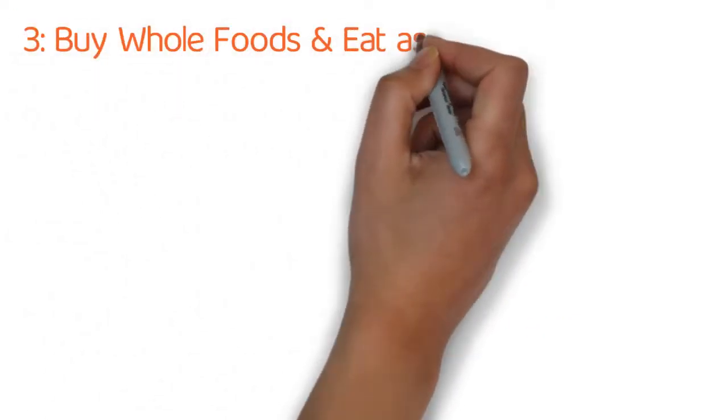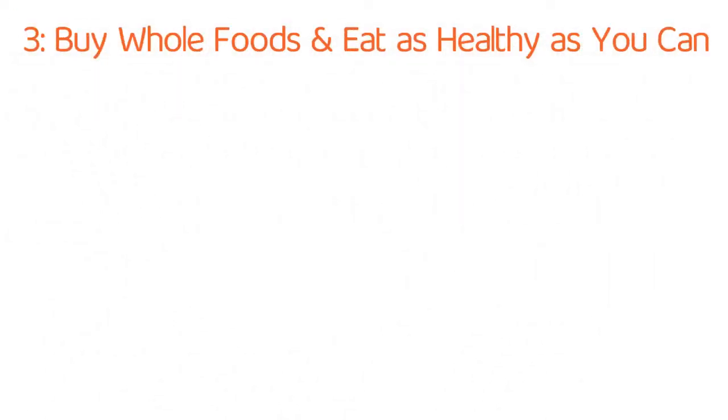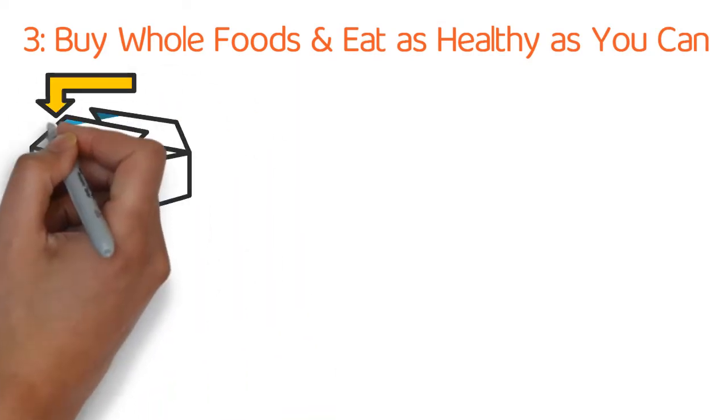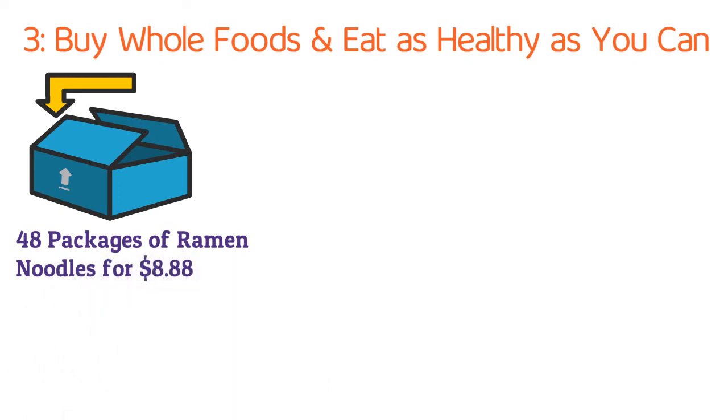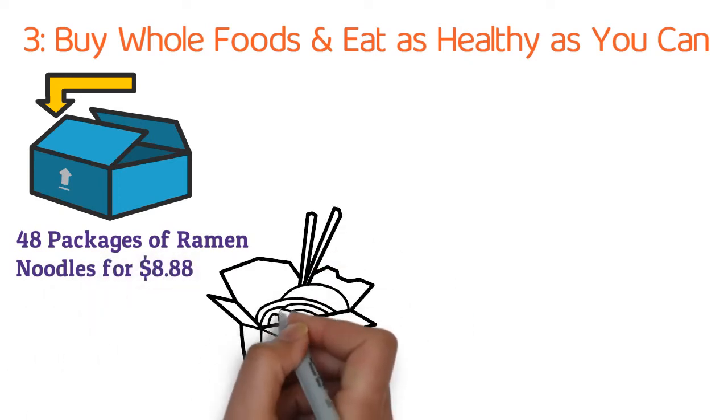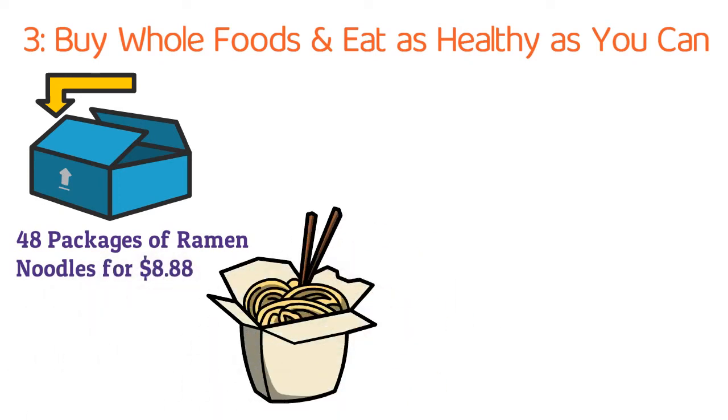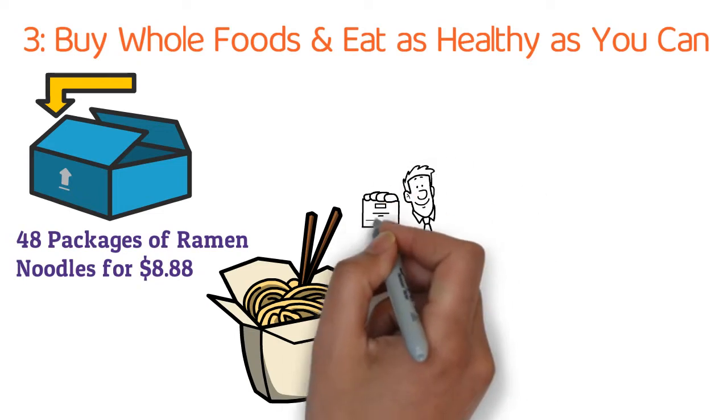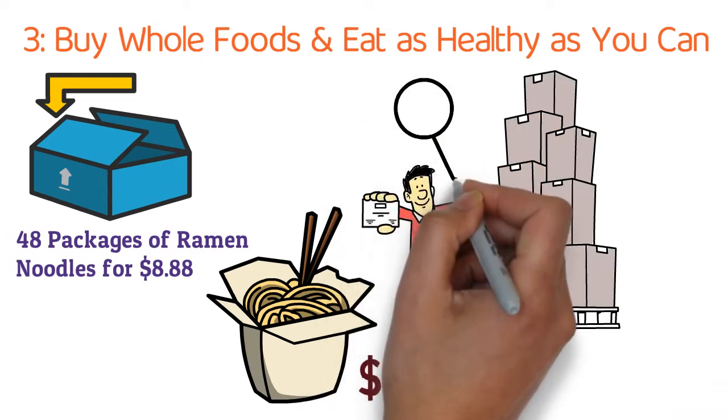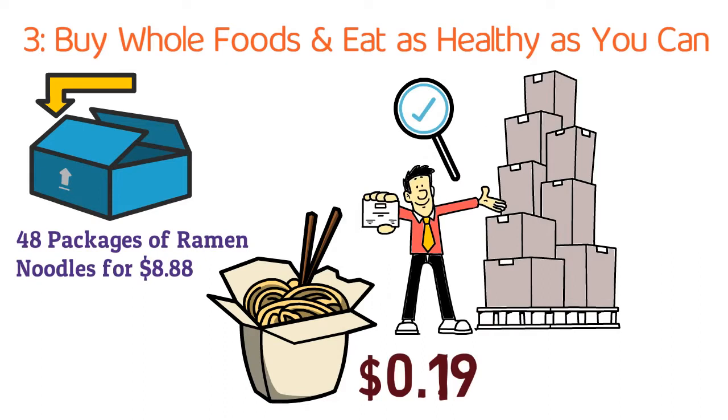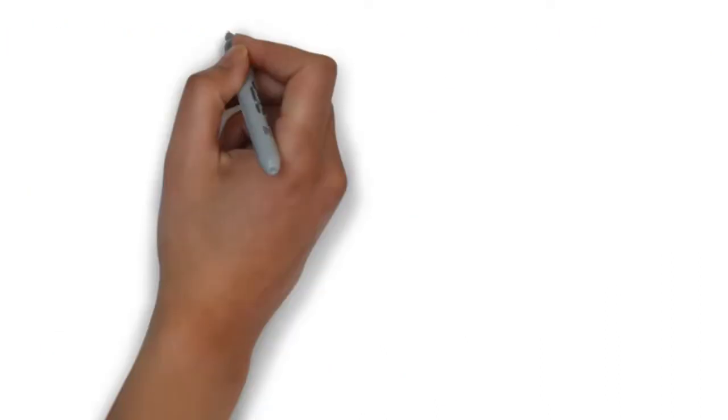Tip number three, buy whole foods and eat as healthy as you can. I recently saw a box of 48 packs of ramen noodles for $8.88. That means that each pack of ramen noodles is approximately 19 cents. You could buy several packages of bulk ramen noodles and live pretty cheaply off of just ramen noodles for months on end.